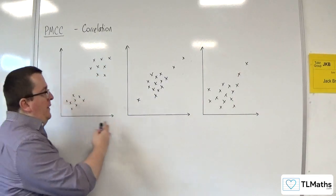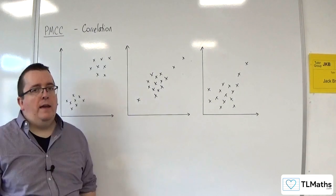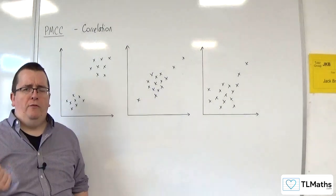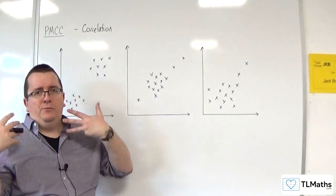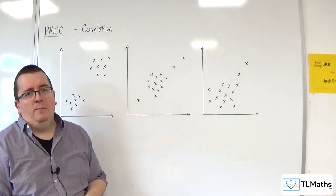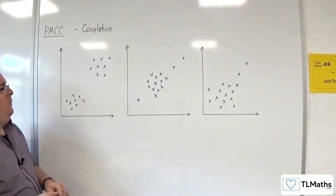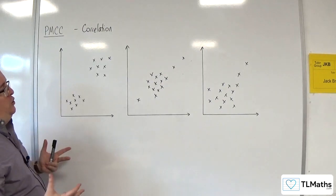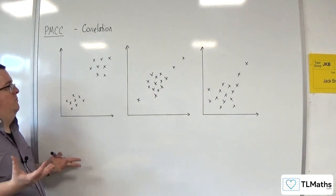Now, in all of these three cases, you could be forgiven for thinking that the data is roughly elliptical, in which case we could go on and perform our PMCC hypothesis test later on down the line. But at this stage, what we want to think about is, well, is the data roughly elliptical?